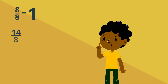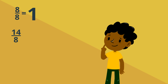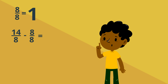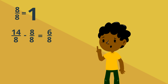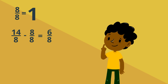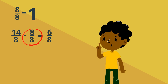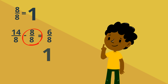Let's find a mixed number for 14 eighths. First, subtract out 1 whole, or 8 eighths. That gives us 6 eighths left. We have 1 whole and 6 eighths. 14 eighths is the same as 1 and 6 eighths.